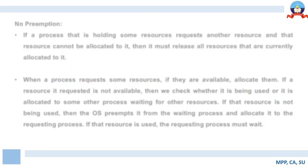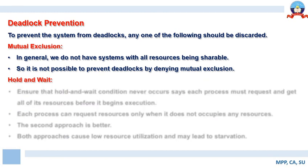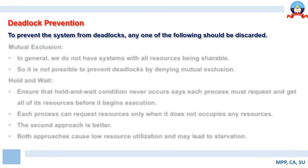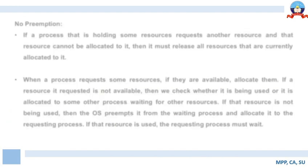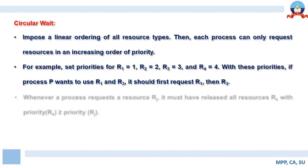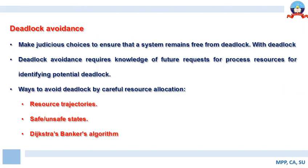So here we have learned about four conditions — mutual exclusion, hold and wait, no preemption, and circular wait — which can be prevented to not allow a system to enter into a state of deadlock. That is what deadlock prevention is all about.